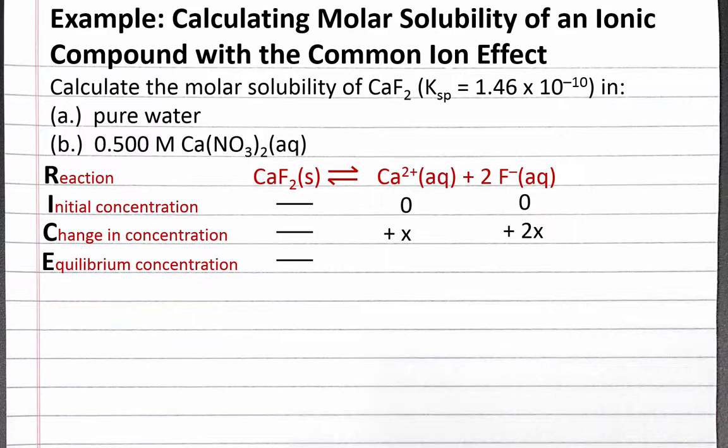X is the moles of solid calcium fluoride that dissolve in one liter of solution, which means x is also our molar solubility of calcium fluoride — what we're solving for in this problem. At equilibrium, we'll have one mole of calcium ions and two moles of fluoride ions for every one mole of calcium fluoride that was dissolved. For our equilibrium constant expression, the equilibrium constant equals the concentration of our products raised to the power of their coefficients divided by the concentration of our reactants raised to the power of their coefficients. Since our reactant is a solid, it doesn't show up in the equilibrium constant expression.